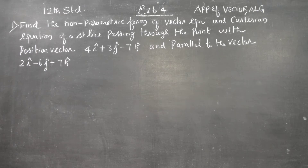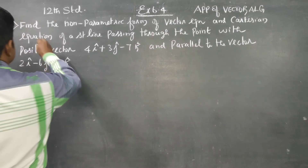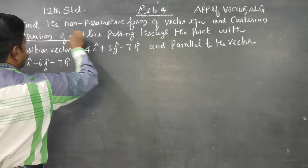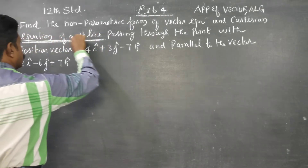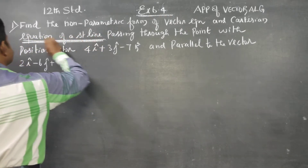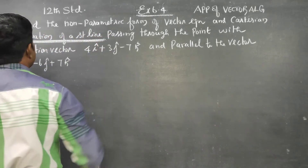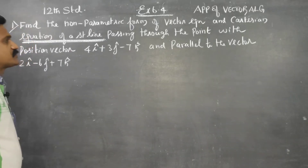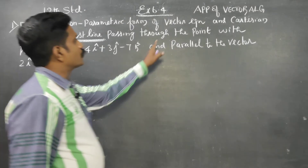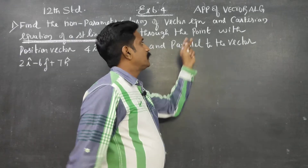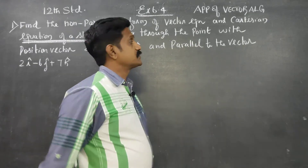Dear 12th standard students, in exercise number 6.4, we are going to see equations of straight lines — like coordinate geometry, in vector algebra. We will see the equation of a straight line passing through a point, and passing through two points.